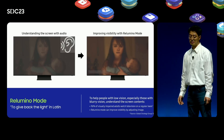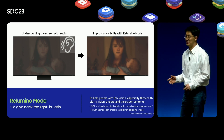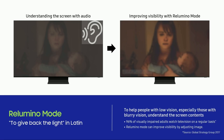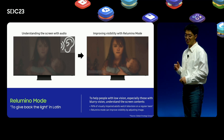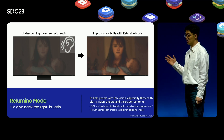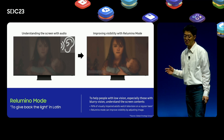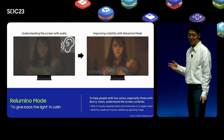In general, people with low vision get information from TV and enjoy leisure activities similar to the general population. According to the survey, 96% of visually impaired people watch television on a regular basis. However, they were forced to use the TV only by understanding the screen with audio, or by listening to voice guidance explaining the screen.